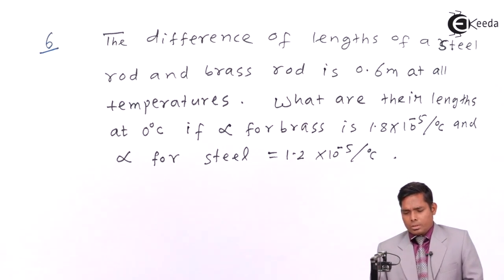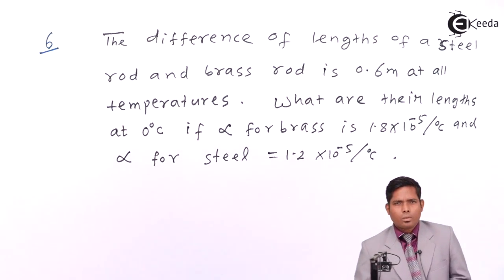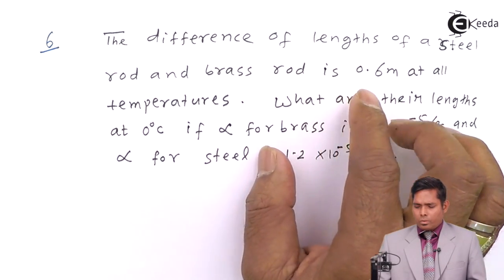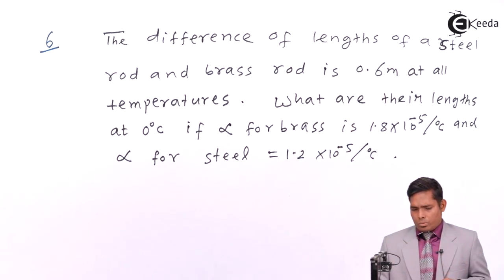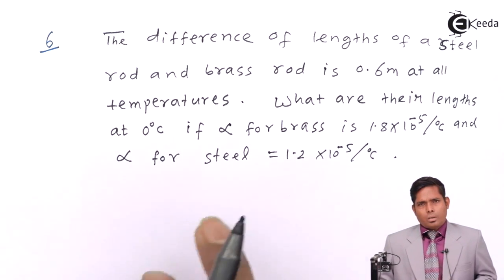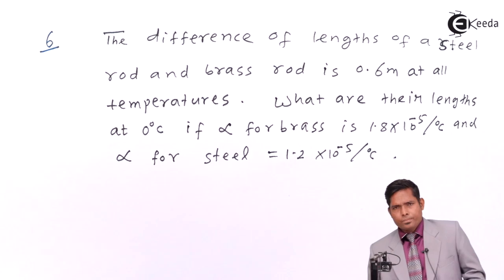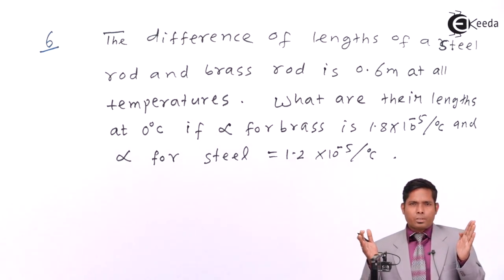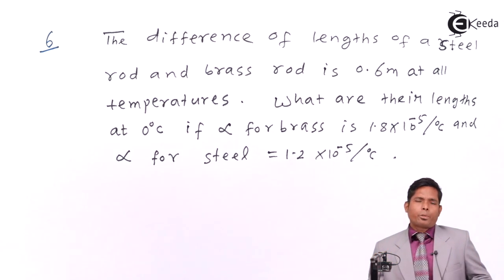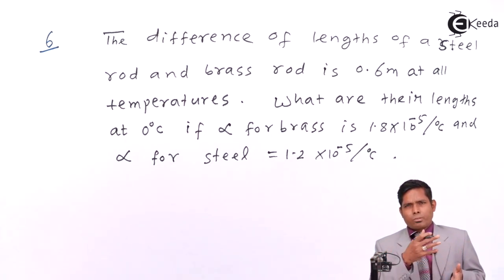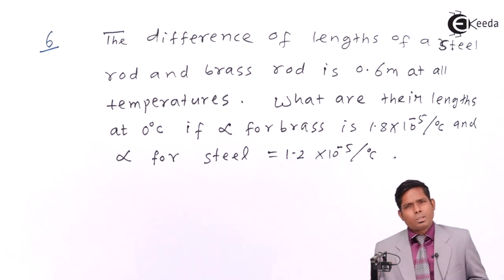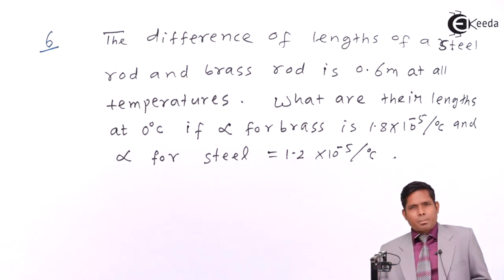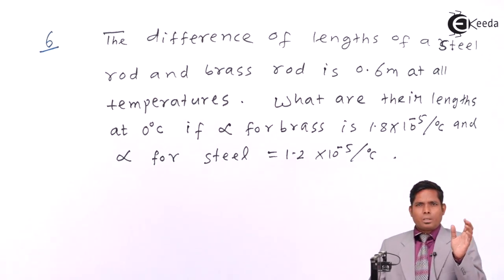As you can see, the question involves the difference in length of a steel rod and a brass rod. We have two rods of different materials — one is brass and another is steel. The difference in their lengths is 0.6 meters at all temperatures. So whether both are at 0°C or both are heated to 50°C, the difference in their lengths always remains 0.6 meters — it is a constant at all temperatures.